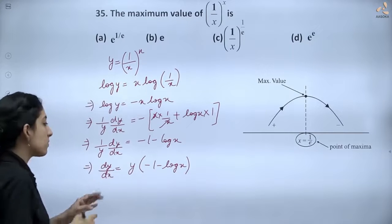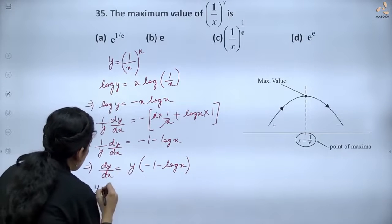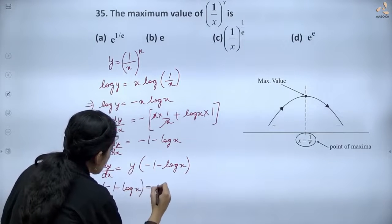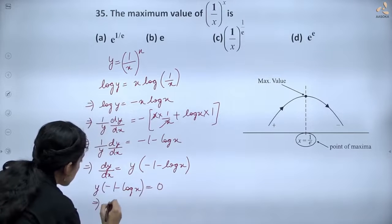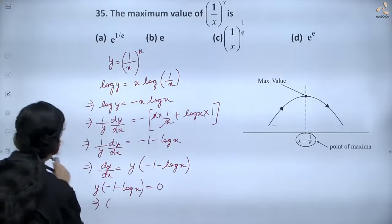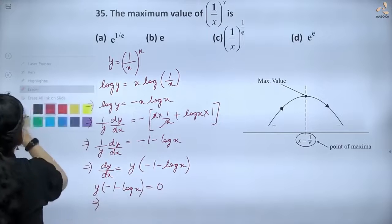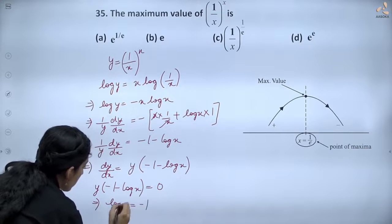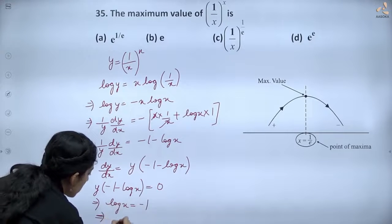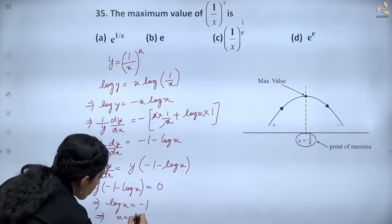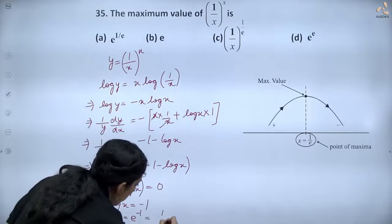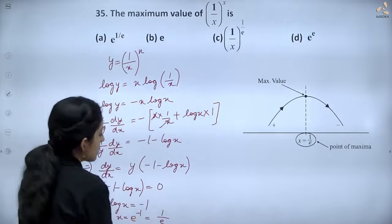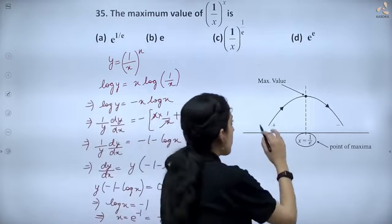For finding the critical points, let dy/dx = 0. This gives -1 - log x = 0, so log x = -1, which implies x = e^(-1), or x = 1/e. So the critical point is x = 1/e.